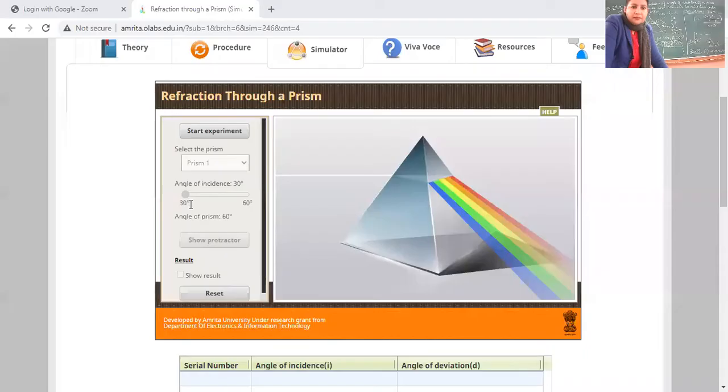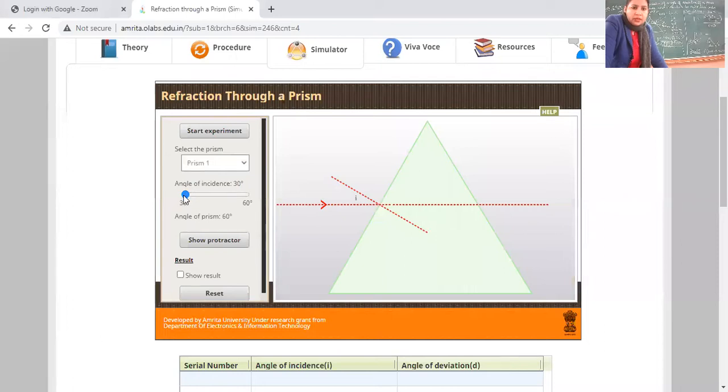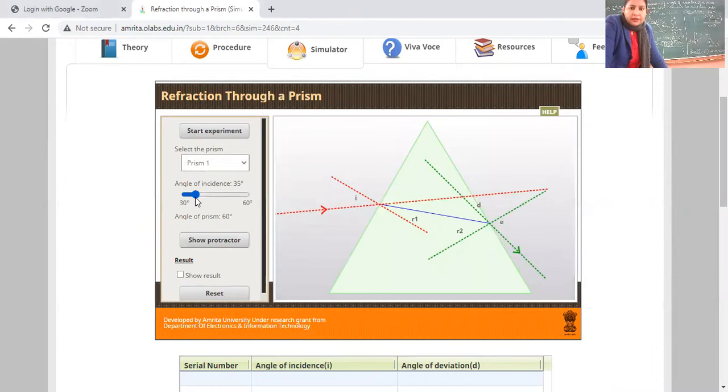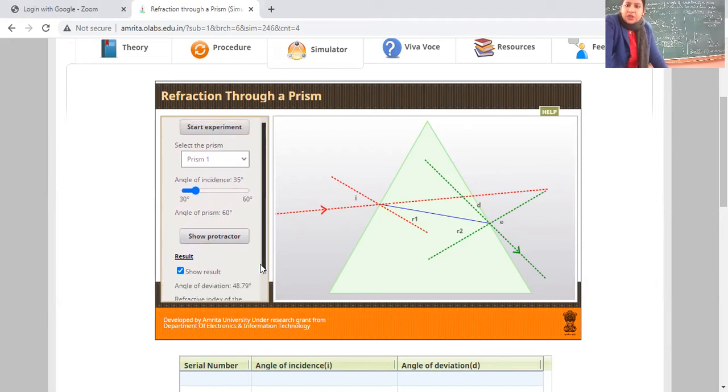Let us take the readings from this simulator. Let us take angle 35 degrees for angle of incidence. The angle of deviation comes out to be 48.79 degrees. In this case, according to the ray diagram, the angle of deviation is 48.79 degrees. Our angle of deviation was 42 degrees, so follow whichever one you prefer. I will take other readings on my own also because you have to paste the sheet as well.